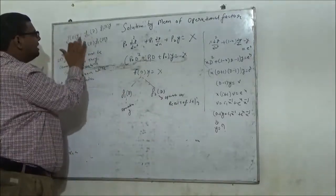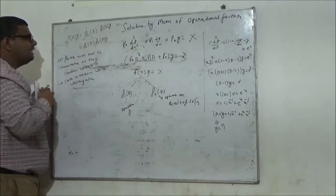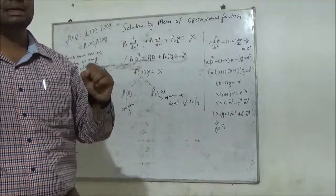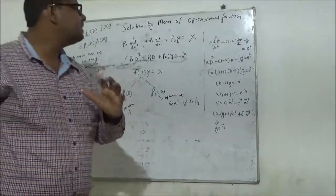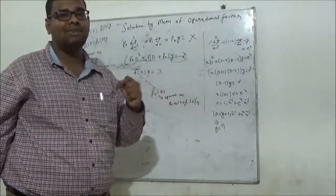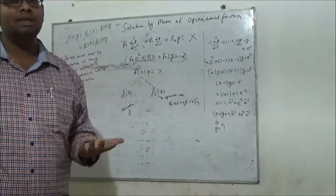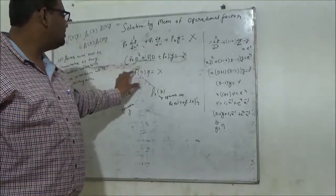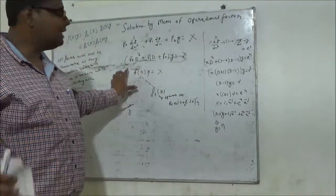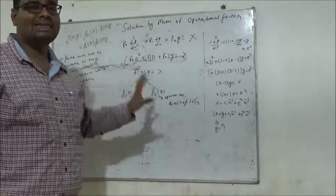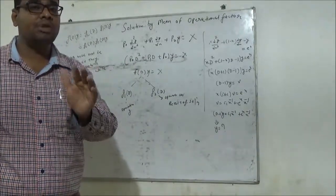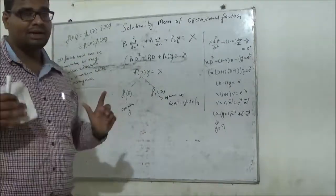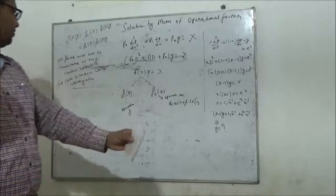So the basic procedure is: we convert the given differential equation in terms of D, where D is the differential operator. Once we get our function in terms of D, we factorize that function into two operational factor parts — one operational factor f1(D) will operate on y, and the second will operate on the rest of the solution.